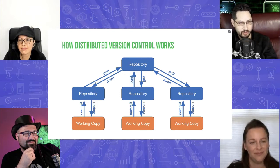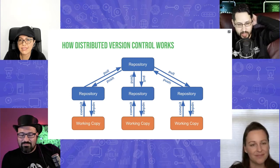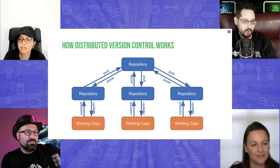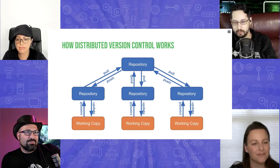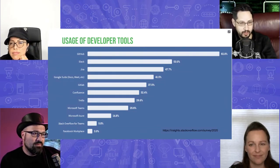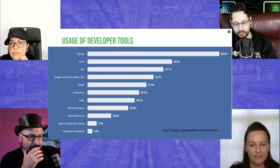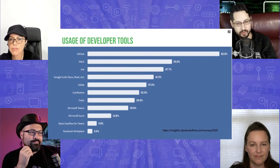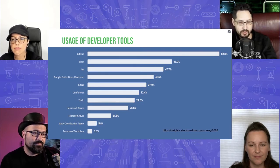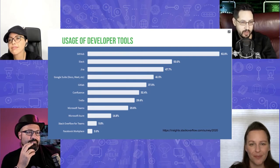In the Stack Overflow survey, GitHub was the highest used tool by developers across the board — used by over 80% of developers. When you're looking at how to manage source control, work with large teams efficiently, and create the source code pipeline to deploy to production, it makes sense to start with a solid foundation: a distributed version control system that underlies your entire DevOps pipeline.